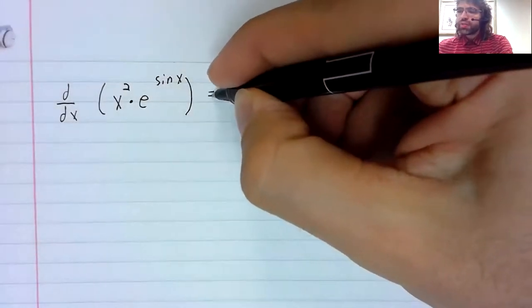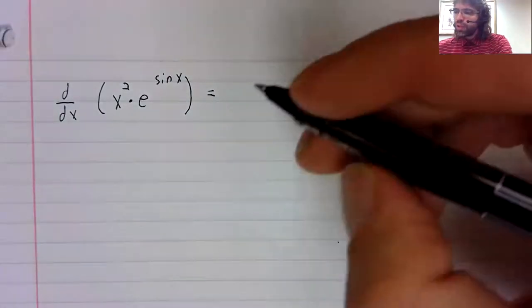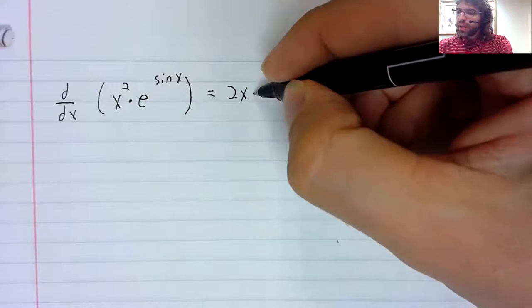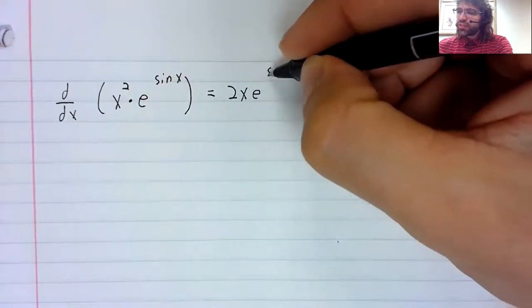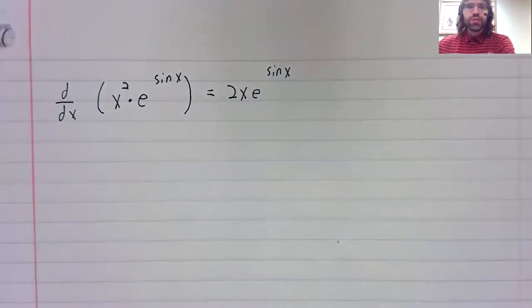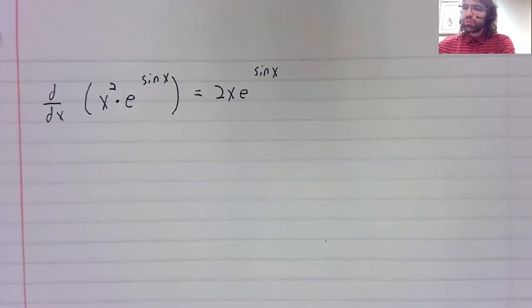And for the first part of the product rule, we take the derivative of x squared and leave this function alone. So that's simple enough.